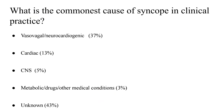Looking at the prevalence, the most common cause is actually unknown causes, around 40%, wherein you are not able to come to any diagnosis even with extensive workup. By and large, the commonest identifiable cause is vasovagal or neurocardiogenic syncope, which contributes to around 30% of cases. This is followed by cardiac causes, then central nervous system causes. Metabolic reasons and drugs contribute to a minority of cases in day-to-day clinical practice.